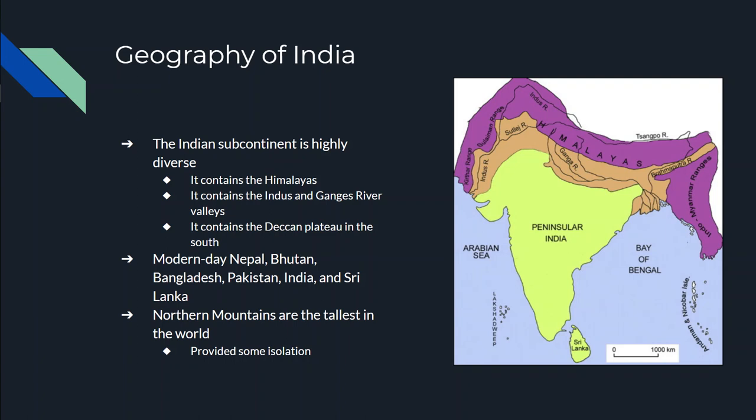Now the Indian subcontinent is highly diverse and it's a lot bigger than you think it is. For example, you've got mountains at the north, you've got rivers on the east and the west — on the east you've got the Ganges, on the west you've got the Indus. The Himalaya mountains are at the top, and then you have what's called the Deccan Plateau down in the center and the southern part of India.